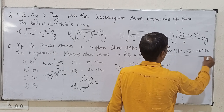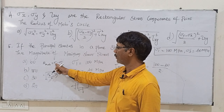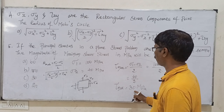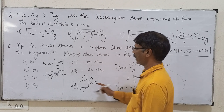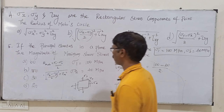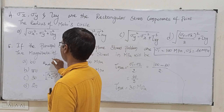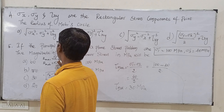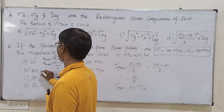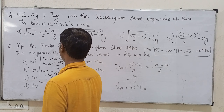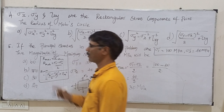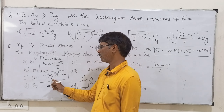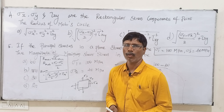That is the formula for sigma 1 and sigma 2. Sigma 1 is 60 MPa, sigma 2 is 60 MPa (or 150 and 60 MPa). The radius of the Mohr's circle equals the square root of (sigma x minus sigma y) divided by 2, whole square, plus tau xy whole square.